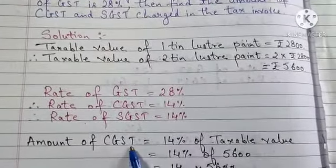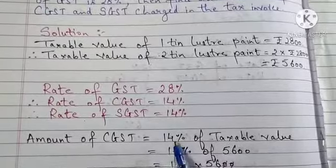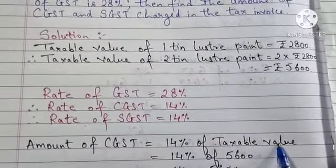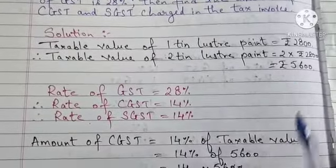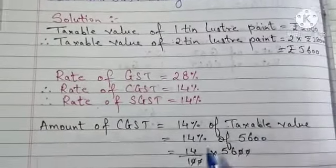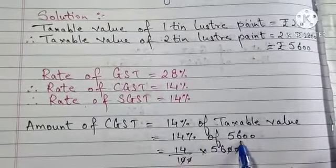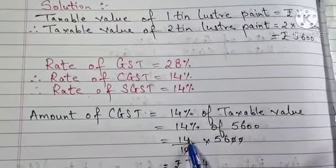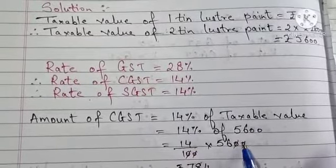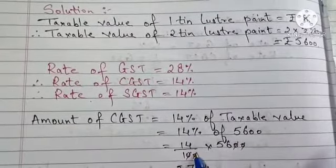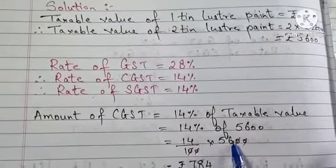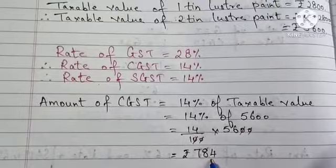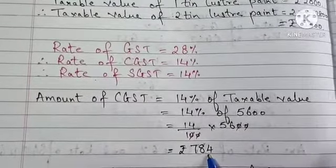Now let's find the amount of CGST. Amount of CGST is 14% of taxable value. The taxable value of 2 tins is 5600. So 14% of 5600, written as 14 upon 100 into 5600. 14 into 56, that gives you Rs. 784.